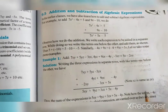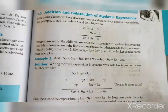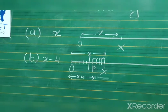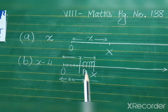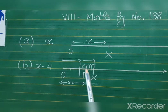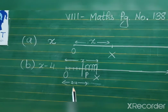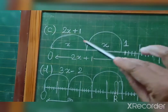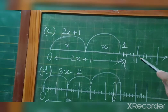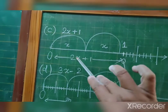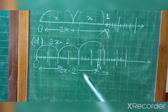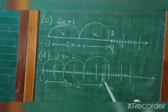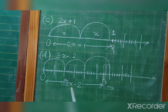Now I will show you how to represent expressions on a number line. The distance between O and X is x. For x minus 4, we move four steps to the left, reaching point P. For 2x plus 1, we jump two times x and then move one unit right to reach point Q. For 3x minus 2, we jump three times x and move 2 units left to reach point R.